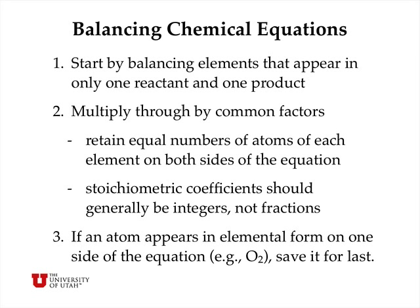A set of general rules for doing this is to start by balancing the elements that appear in only one reactant and one product instead of one reactant and two products or vice versa. Second, multiply through by common factors in order to retain equal numbers of atoms of each element on both sides of the equation and to have stoichiometric coefficients be integers and not fractions.